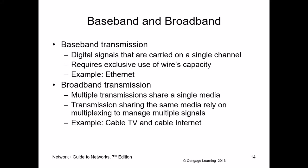Baseband means one signal carries the data. For example, in '100BaseT': 100 means 100 megabits per second, 'Base' means one signal is sending the data, and T means twisted pair cable. Broadband means multiple signals — multiple frequencies — are carrying the data simultaneously. You want broadband because multiple frequencies carrying data give you higher throughput.